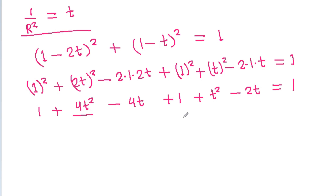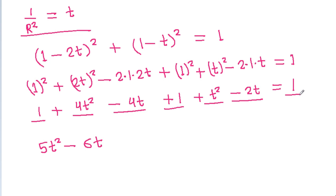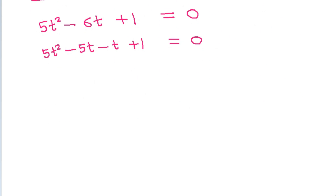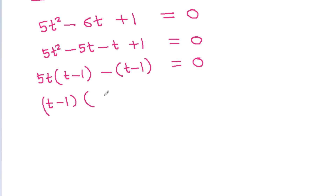Simplifying: 5T² − 6T + 1 = 0. Factoring: 5T² − 5T − T + 1 = 0, so 5T(T − 1) − 1(T − 1) = 0, giving (T − 1)(5T − 1) = 0.